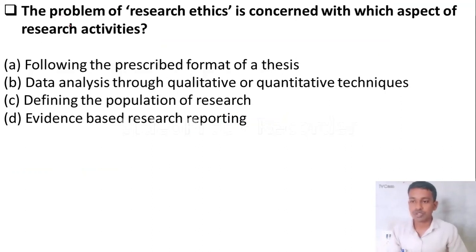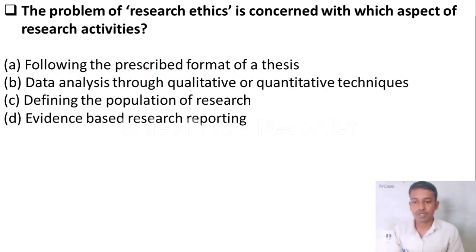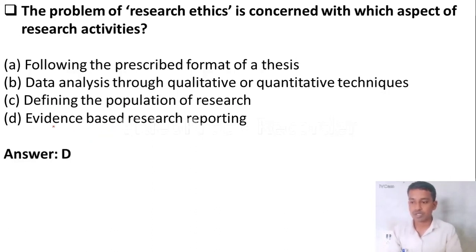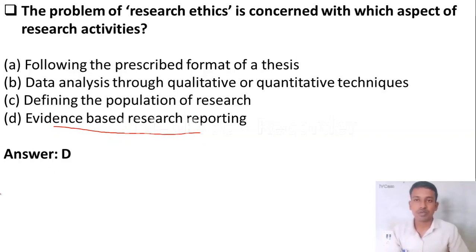The question is: the problem of research ethics is concerned with which aspect of research activities? Option A: following the prescribed format of a thesis. Option B: data analysis through qualitative and quantitative techniques. Option C: defining the population of research. Option D: evidence-based research reporting. The right answer is Option D — evidence-based research reporting — which is related to research ethics.